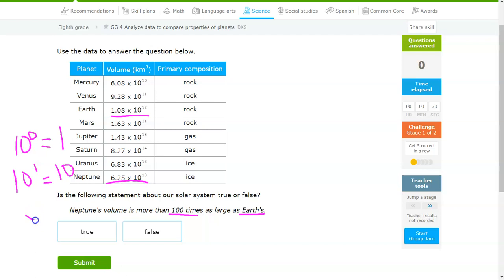So 10 to the 0 to 10 to the 1 means that there is a 10 times difference. So from here to there, you can see that it's going to be at most 10 times difference, maybe a little bigger, but definitely will not be 100 times bigger because it would have to have been at least 10 to the 14, if not greater. So this one should be false.